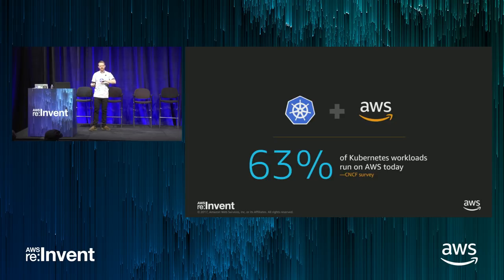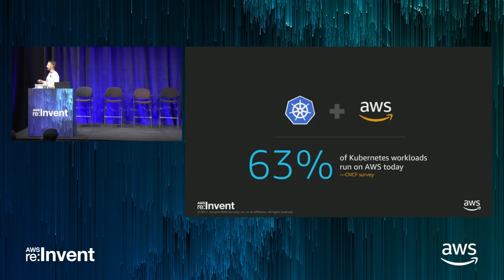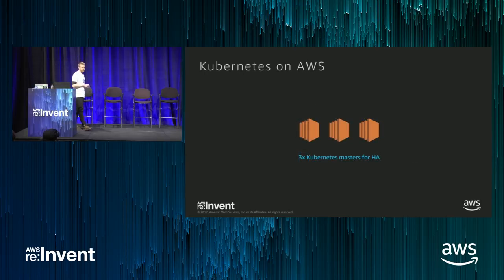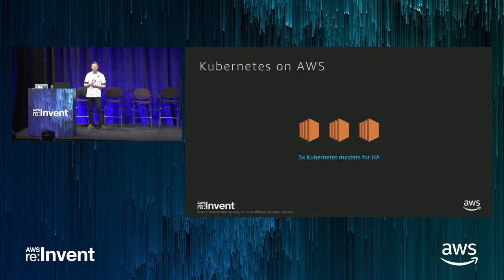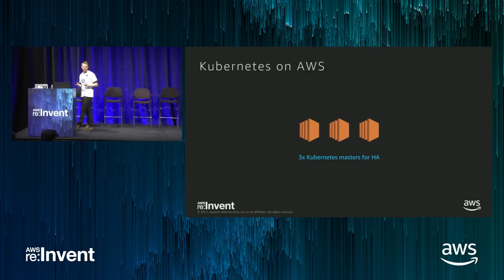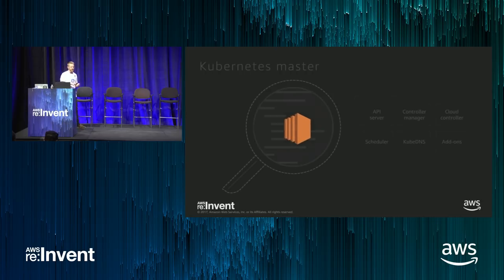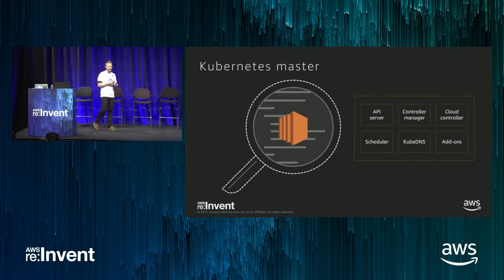Let's look at what the traditional Kubernetes deployment looks like architecturally on AWS today — before EKS. You could run a single AZ Kubernetes cluster, but generally we see customers running Kubernetes across three availability zones. That's the natural deployment pattern. You run your masters and etcd across three AZs to ensure you have a highly available control plane. Each Kubernetes master runs a copy of the same components.